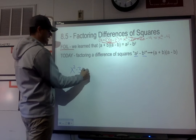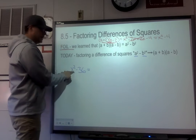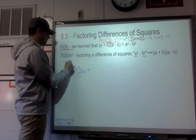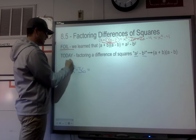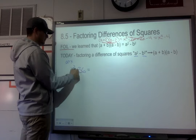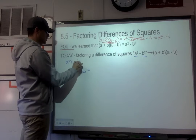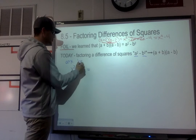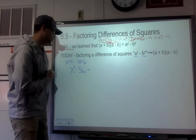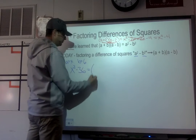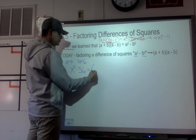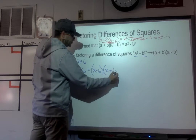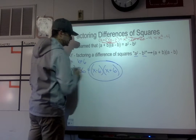If we were asked to factor x² - 36, we know that x² is a perfect square, so our a term is the square root of that, which is x. Our b term, 36, is a perfect square, so our b term is the square root of 36, which is 6. So the factored form would be (x - 6)(x + 6).